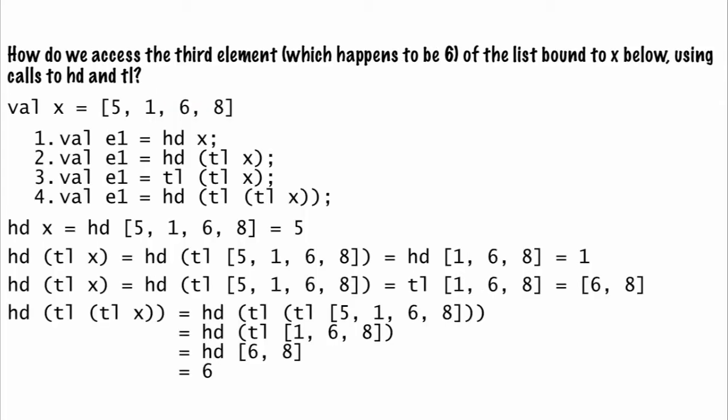This question tests your ability to string head and tail commands together to access a particular item within a list. If we consider each option in turn, the head of x is the first item in the list, which is 5.